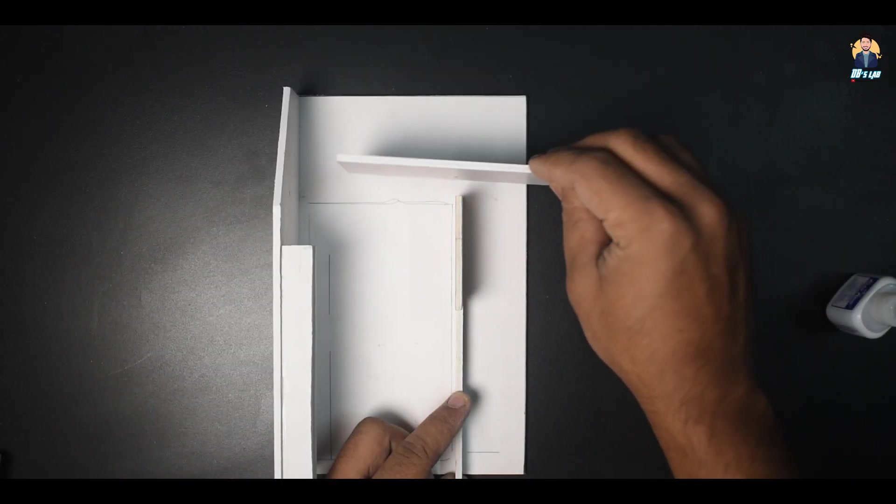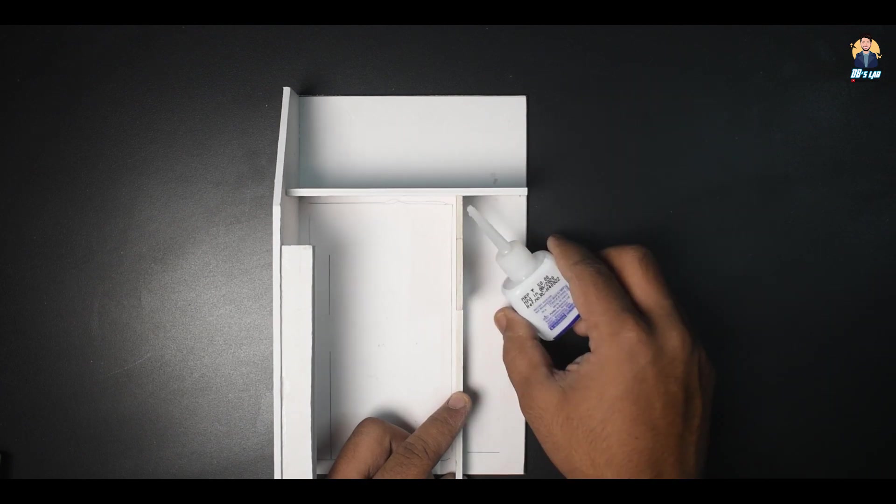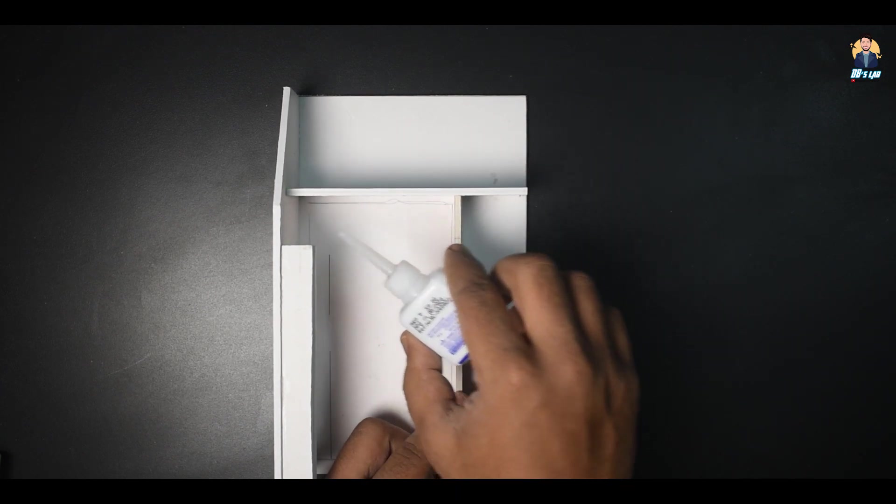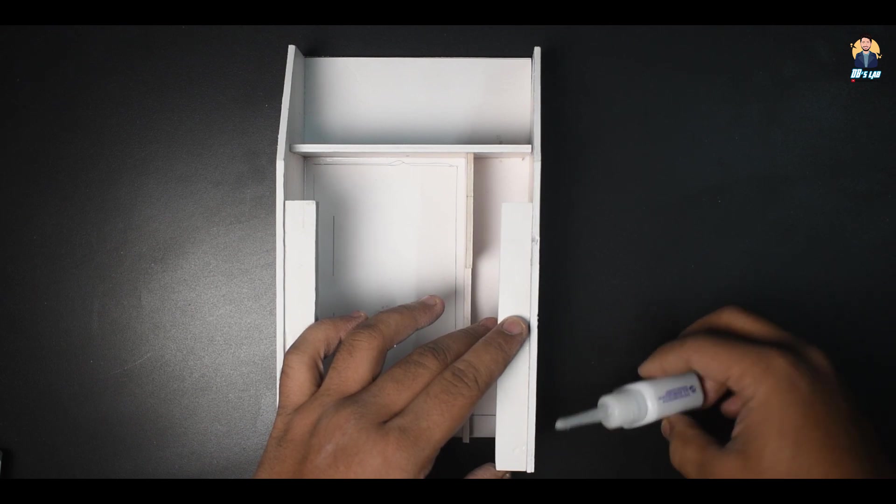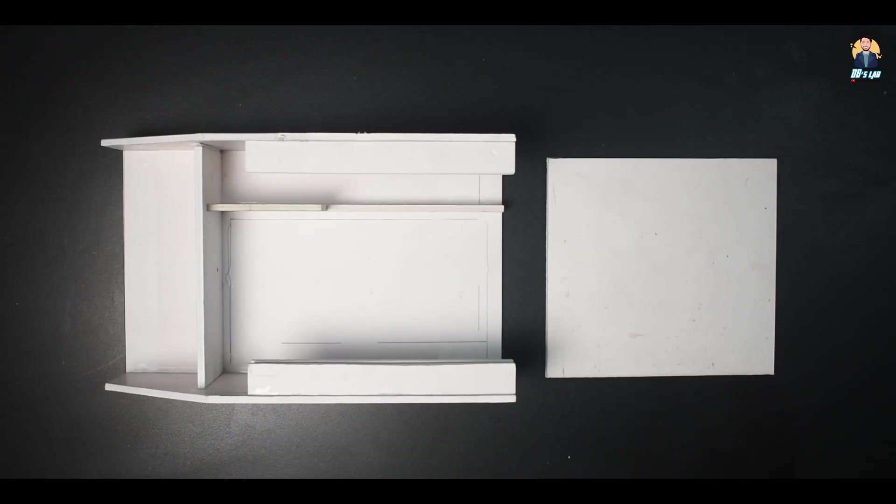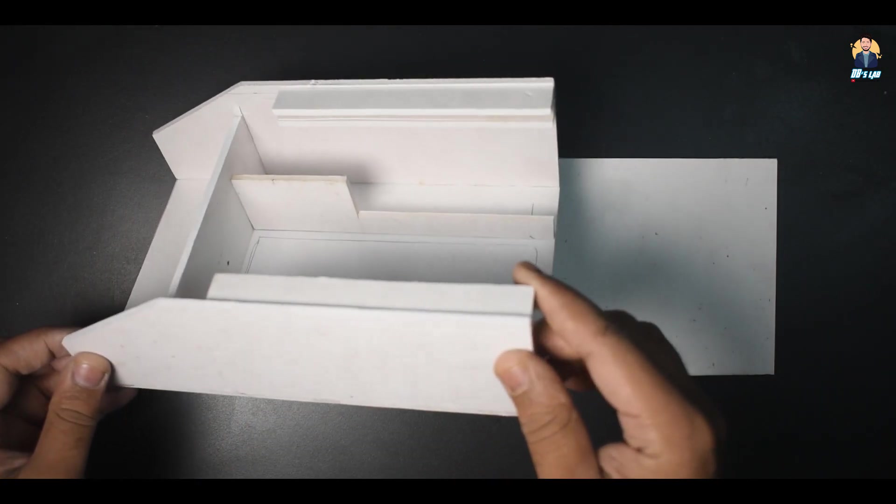Now fix the compartment and the partition walls. I am using Flex Quick super glue for this purpose. If done correctly it will look something like this.